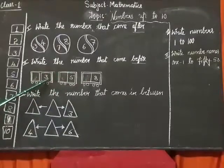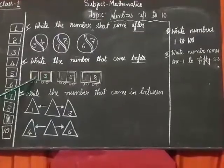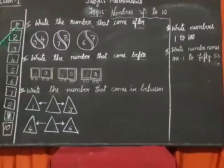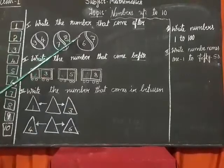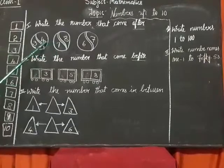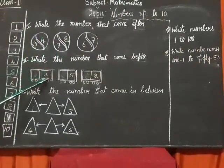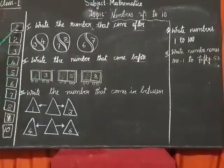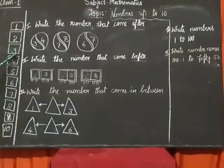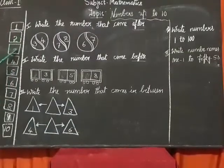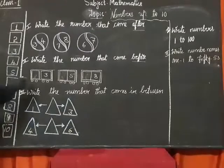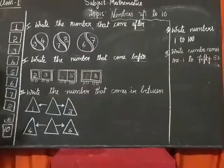What comes before 3? Let me check here: 1, 2, 3. What comes before 3? Before 3, which number comes? 2. Yes. We will write 2 in the block. Number 2.